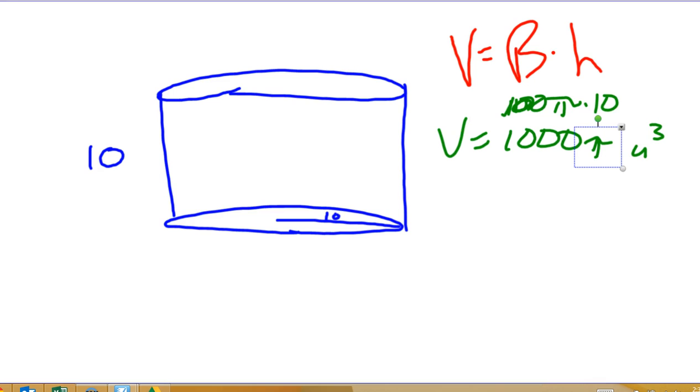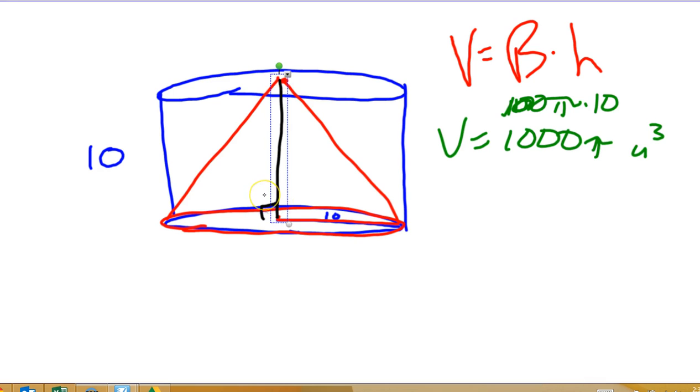Well, instead, if my base is the exact same circle, right, also with a radius of 10, right? But now, instead of going up to another circle, it goes up to a point. This distance here is still 10, right? So it's the same as it was before, still 10. So it has the same height and the same base.